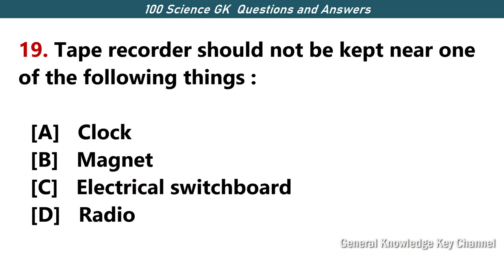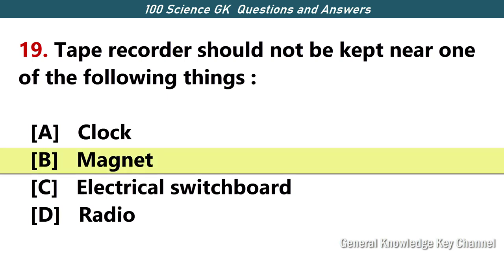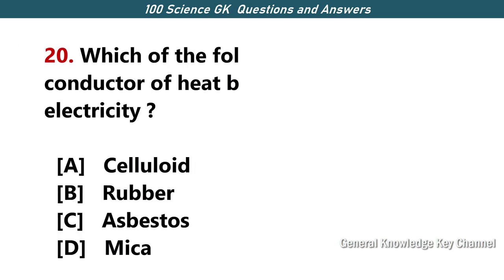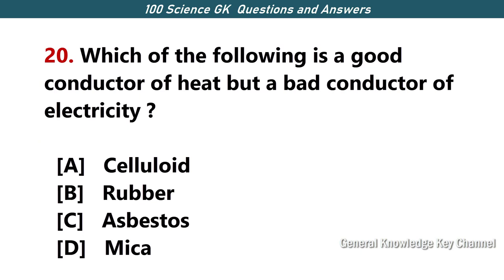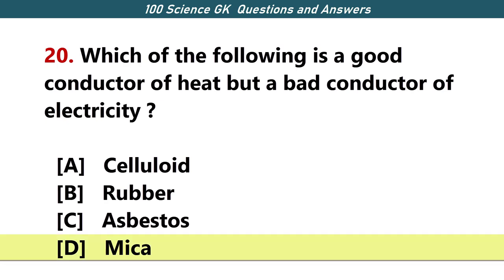A tape recorder should not be kept near — Answer B — a magnet. Which one of the following is a good conductor of heat but a bad conductor of electricity? Answer D — mica.